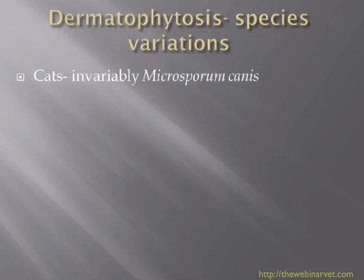Cats invariably get Microsporum canis, but we have noticed recently that Microsporum persicolor has been recognized in the literature, along with Trichophyton and Microsporum gypsium. It's worth saying that occasionally we even see organisms such as Trichophyton rubrum, which is the human form that causes athlete's foot. When you get something like that back from a sample, you have to think it could be carriage of an organism that the cat has actually caught from the human — rather than the other way around, where cats tend to be blamed for everything. It may just be carriage; it's not really clinically significant.